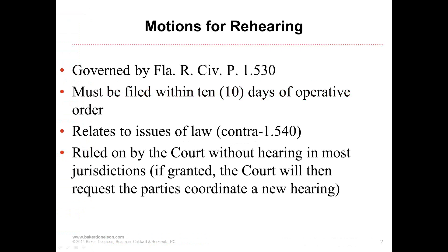If you timely file a motion for rehearing, you will toll the time required to file your notice of appeal. This rule changed recently — you now have 15 days to file your motion for rehearing. On that 15th day, if you file a motion for rehearing regarding a final order, you typically have 30 days from the date of rendition to appeal it. As long as the motion for rehearing is timely filed, you are tolling the time to later appeal. If you are outside that time period, you are not only foreclosing your right to seek rehearing — you are also foreclosing your right to appeal.